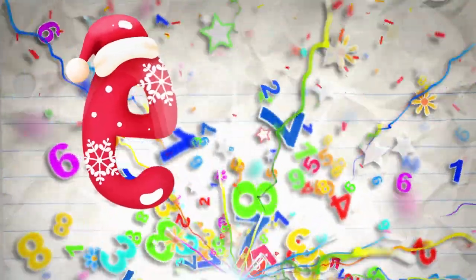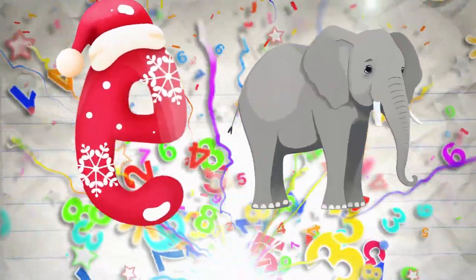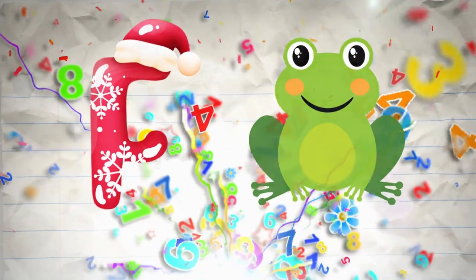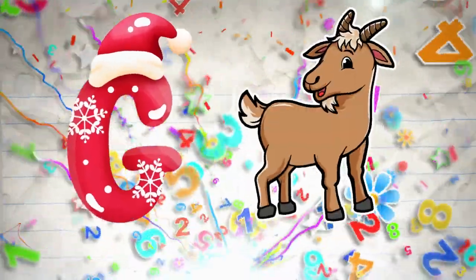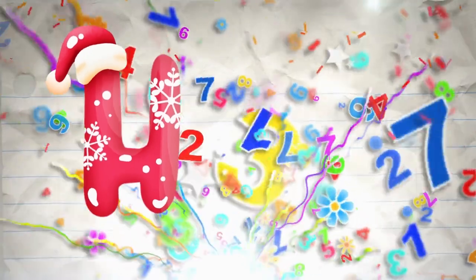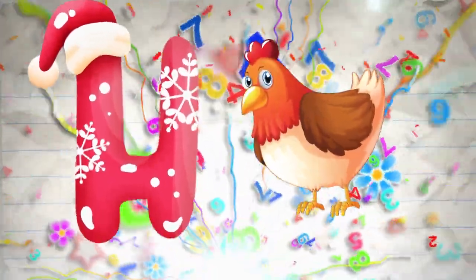E is for elephant, e-e-elephant. F is for frog, f-f-frog. G is for goat, g-g-goat. H is for hand, h-h-hand.